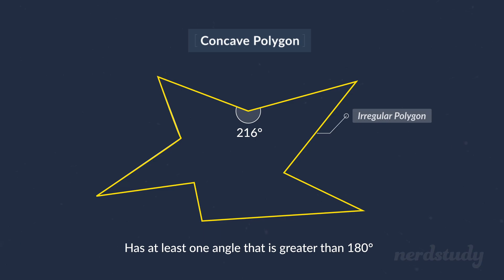It's irregular because, clearly, not all side lengths are equal to each other. And it's concave since not all angles on the inside are under 180 degrees. For example, this angle right here is clearly greater than 180 degrees.